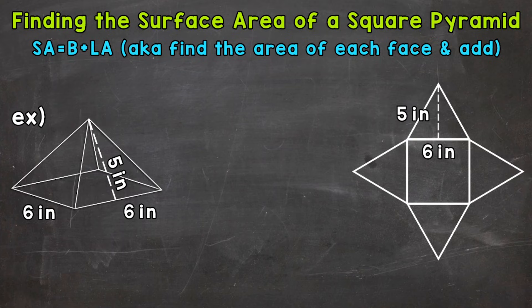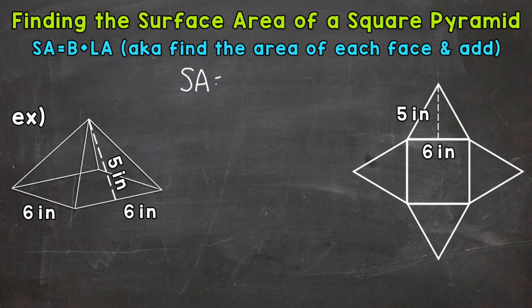Now there are a couple of different ways to work through these, so I'll show you some different options for finding the surface area of a square pyramid. Let's jump into our example where we have a square pyramid with a slant height of five inches and the sides of the base are six inches. The first thing I'm going to do is write out: surface area equals the area of the base plus the lateral area.